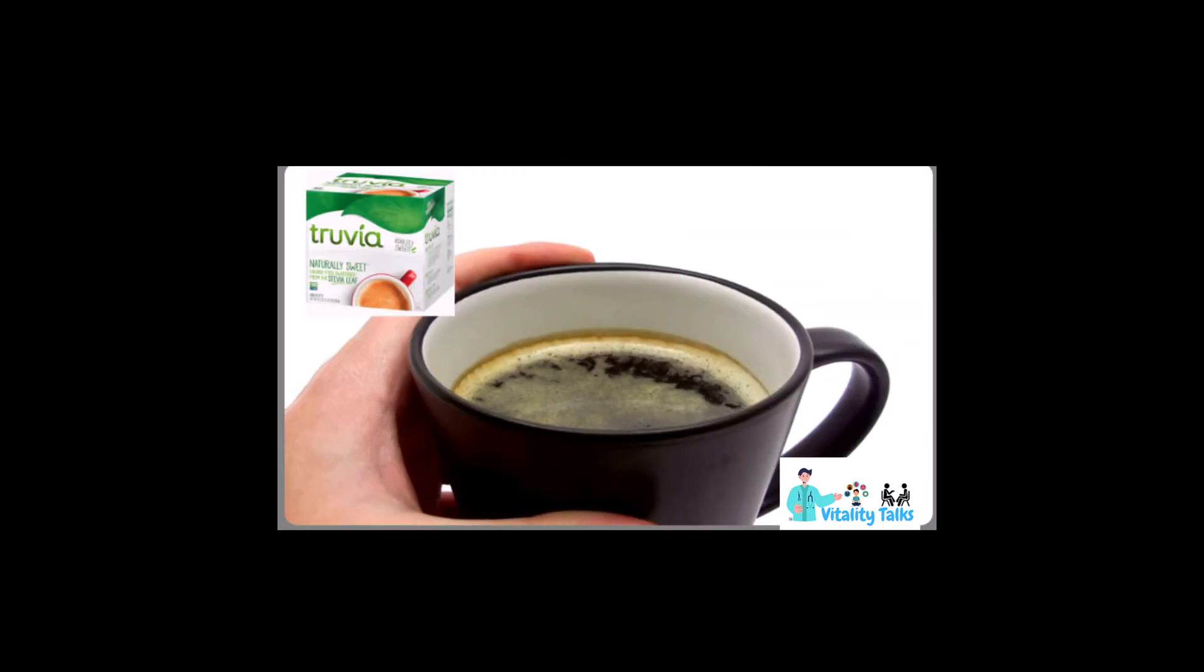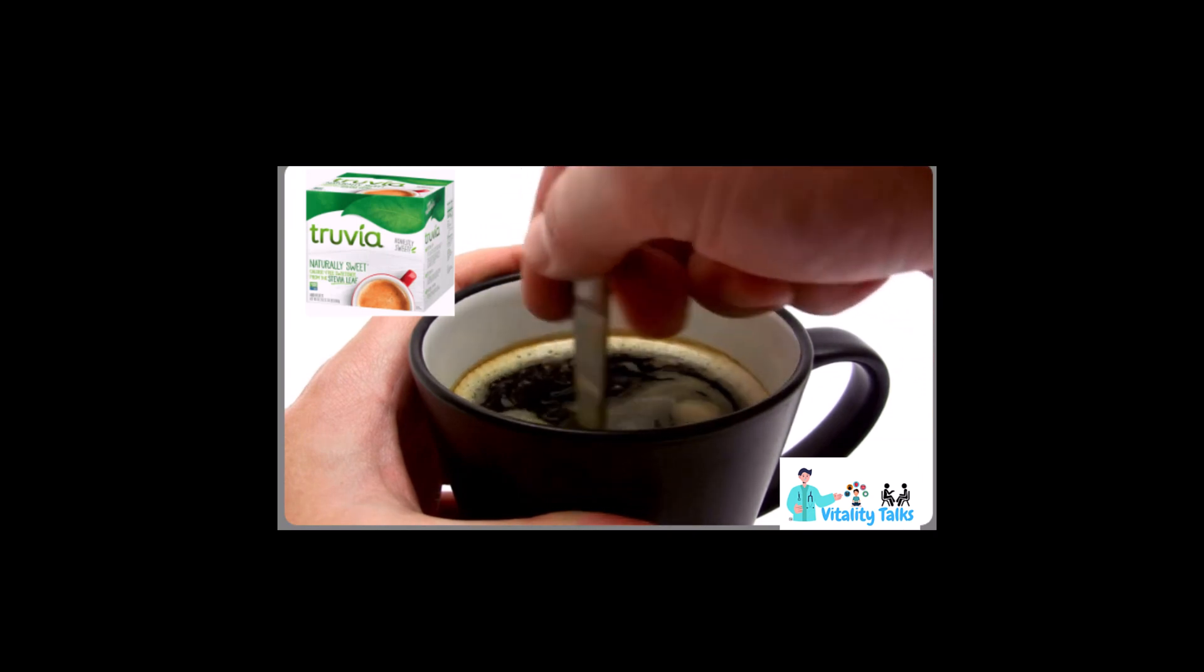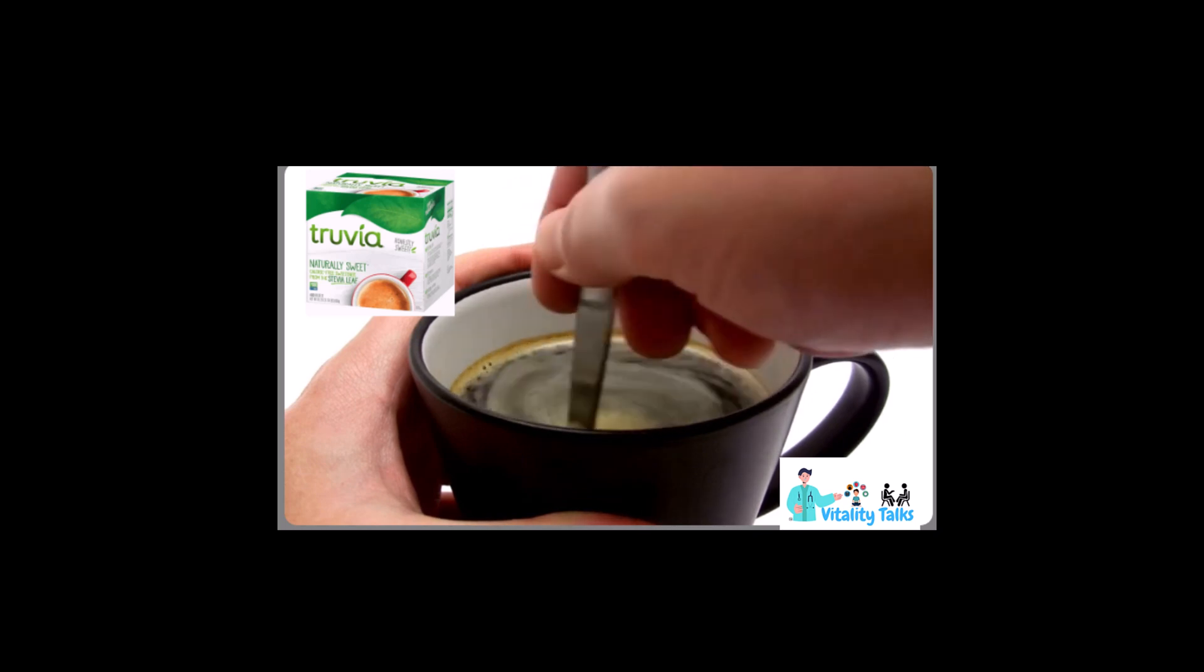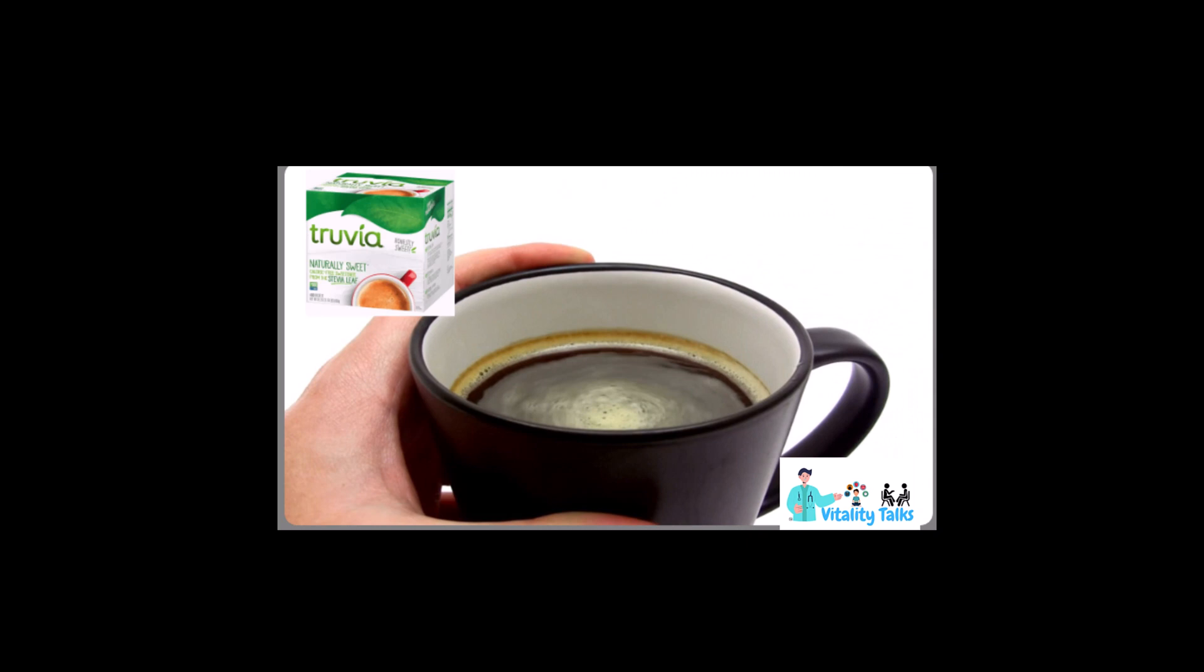Truvia, on the other hand, is a brand of artificial sweetener that is marketed as a natural, zero-calorie alternative to sugar. It is made from a blend of Stevia leaf extract and erythritol, a sugar alcohol. Truvia has a very low glycemic index and can be used in cooking and baking.